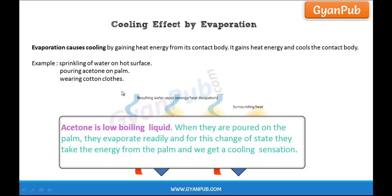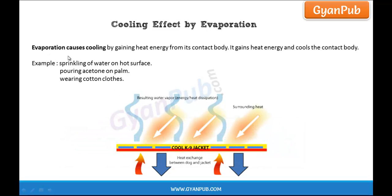Wearing cotton clothes in summer is also one of the best examples which shows evaporation causes cooling. If we wear cotton clothes, the surrounding liquid gets absorbed by the cotton clothes, and those clothes dry up due to evaporation. Due to this evaporation, heat energy is gained from the body and gets vaporized, resulting in heat dissipation so that the body gets cooled.